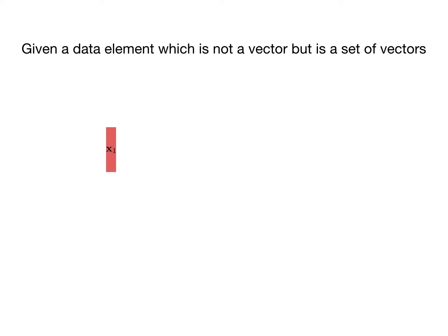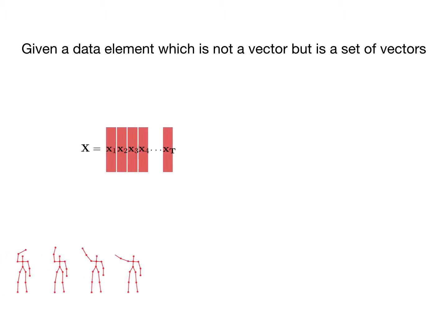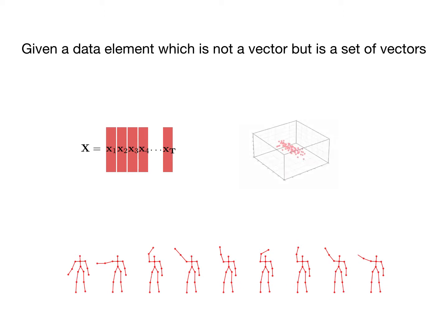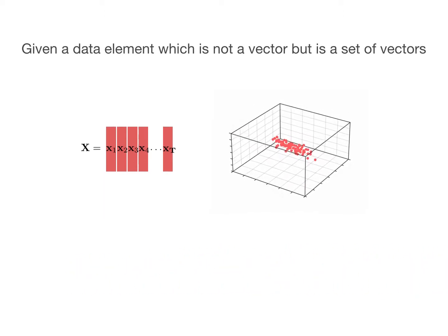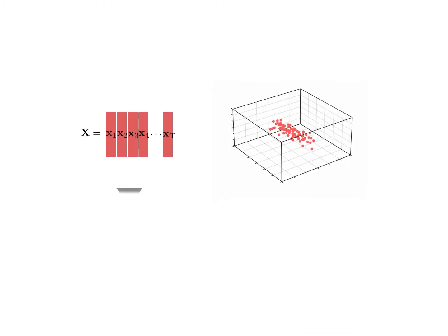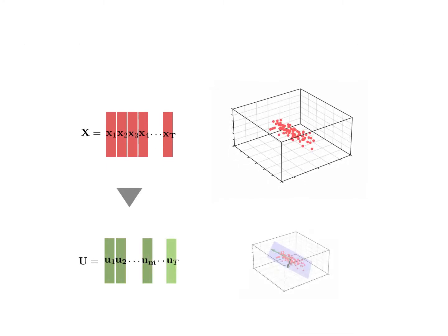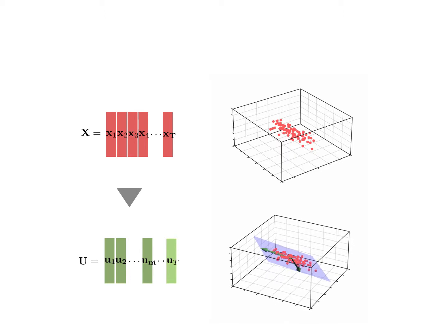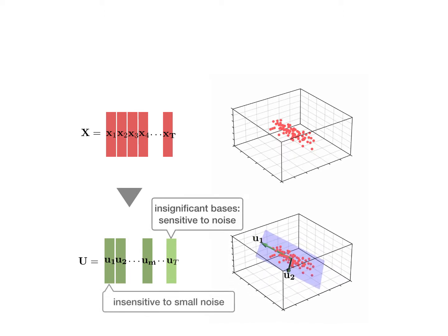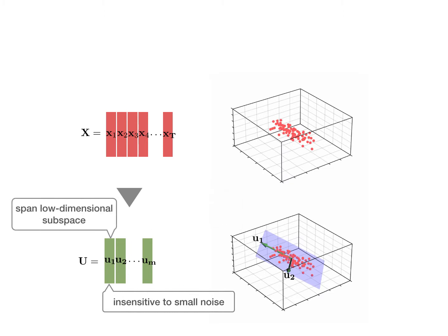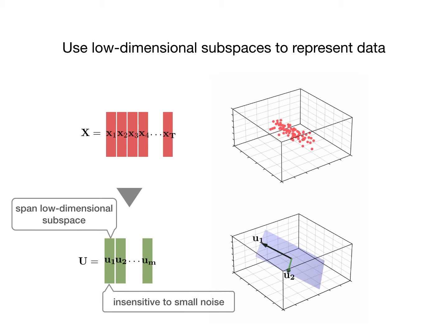Given a data element which is not a vector but is a set of vectors — for example, a sequence consisting of skeletons — it could be a set of points in a high-dimensional space. These points could be assumed to lie in a linear subspace embedded in the high-dimensional space. After removing the insignificant subspace bases, the remaining bases tend to be insensitive to small noise, and we can use low-dimensional subspaces to represent data.